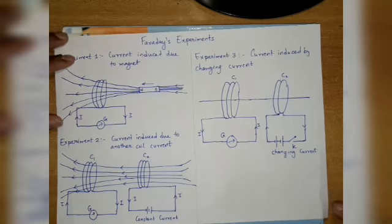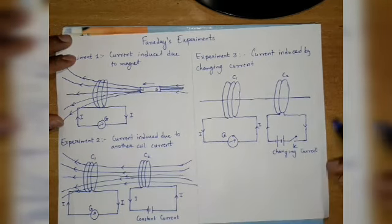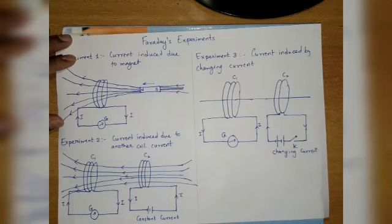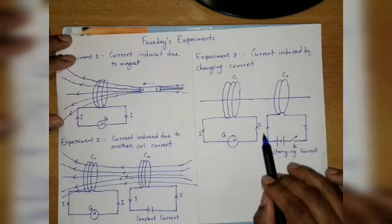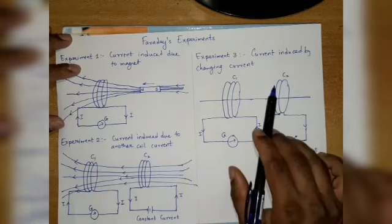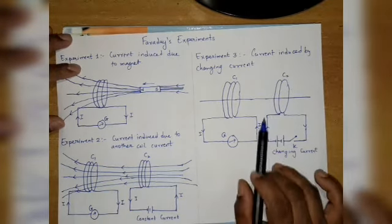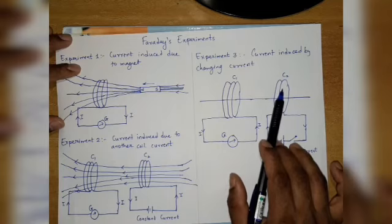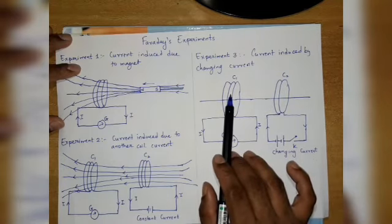happening? When we switch on, we press switch K. This circuit will pass current, magnetic field will be produced by coil C2, and magnetic field lines will pass through C1.